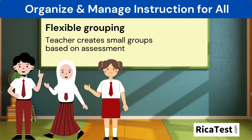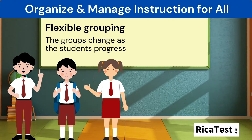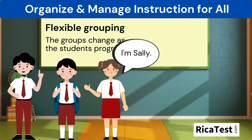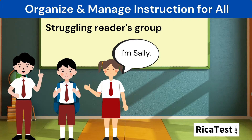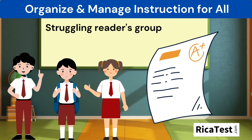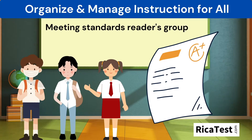Flexible grouping is when the teacher creates small groups based on assessment. It's called flexible because the groups change as the students progress. For example, student Sally might have started in a struggling readers group. However, as she works hard, she can work her way into a new group, and the teacher will regroup her based on her current reading abilities and needs by collecting and analyzing data through her assignments.